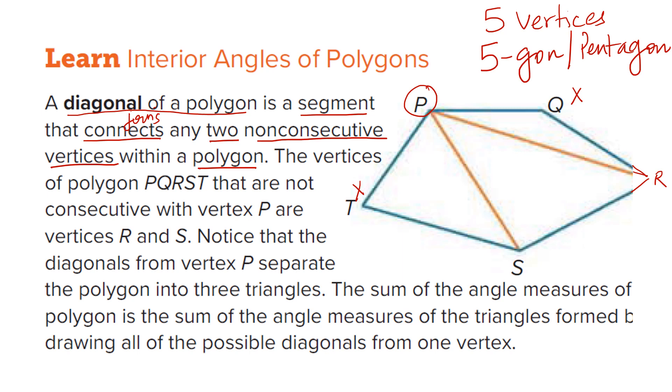So join P with the non-consecutive vertex. So PR, that's a diagonal, a segment and PS, that's again another diagonal. So how many diagonals it has? Two diagonals. So if a polygon has 5 vertices, it is getting 2 diagonals here for this one. If I take this vertex T, then what will be the diagonal TQ and PR. Now if you look carefully, these 2 diagonals divide the polygon into 1, 2 and 3. So it divides into 3 triangles.